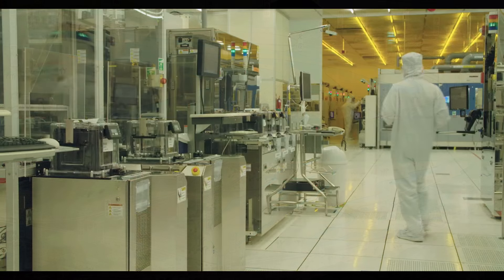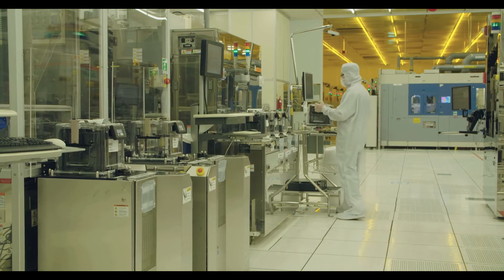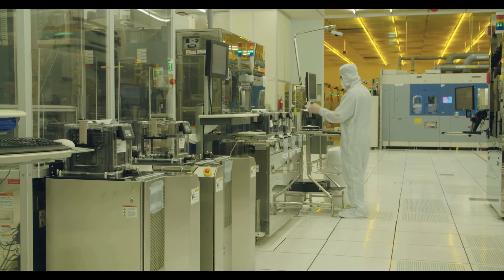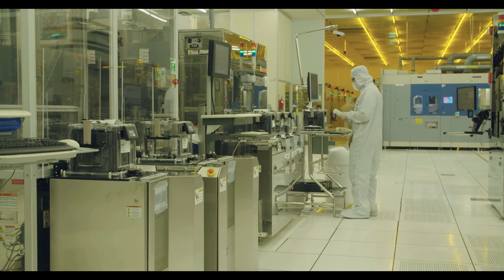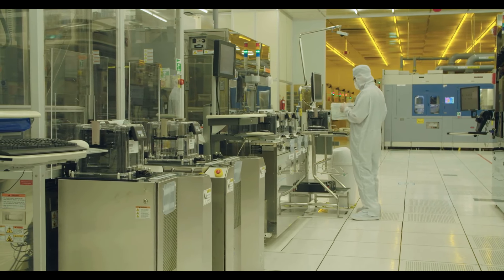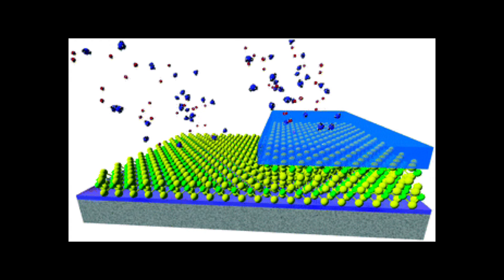Semiconductor manufacturing is heavily dependent on deposition techniques. It is one of the key aspects of the semiconductor manufacturing gameplay loop. We add thin layers, modify them, maybe remove some of its parts, and then do it all over again.